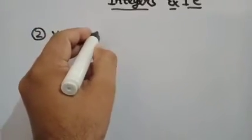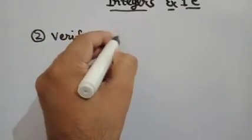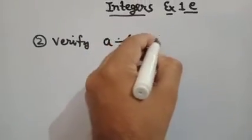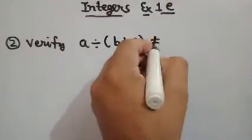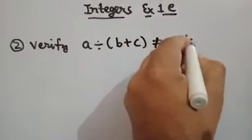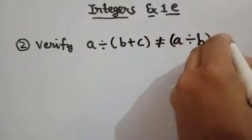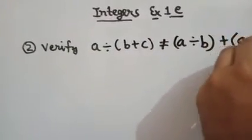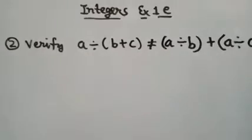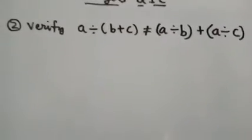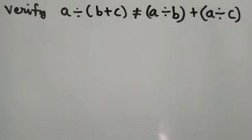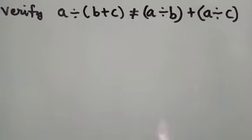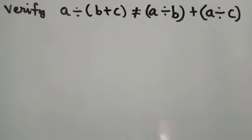A divided by B plus C is not equal to A divided by B plus A divided by C. This identity has to be verified by taking ABC some numerical value of A, B and C.